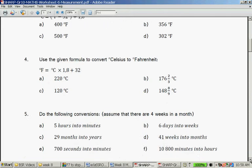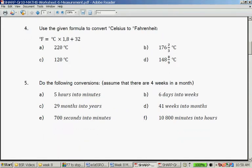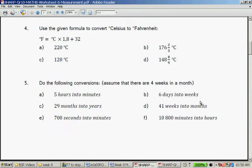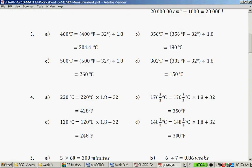Question five. Do the following conversions, assume that there are four weeks in a month. Five hours into minutes - how many minutes in an hour? 60. So we'll go 5 times 60. Six days into weeks - how many days in a week? Seven. 29 months into a year - how many months in a year? 12. 41 weeks into months - how many weeks in a month? Four. 700 seconds into minutes - 60 seconds in a minute. The same as hours and minutes. And 10,800 minutes into hours - again, 60 minutes in an hour.